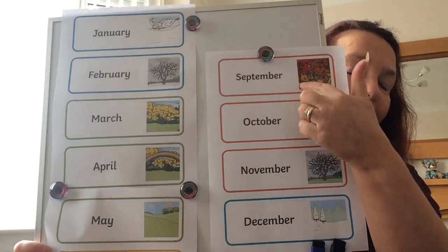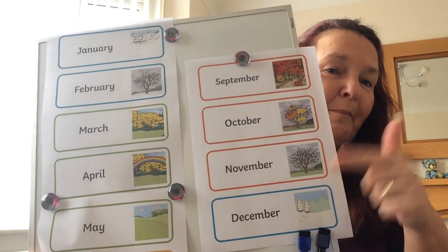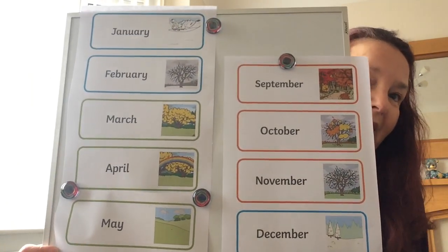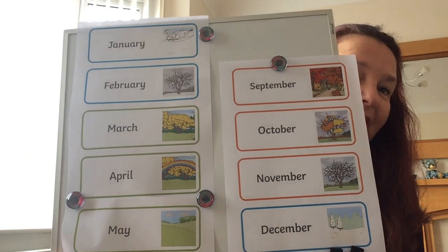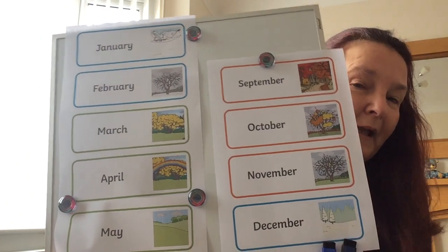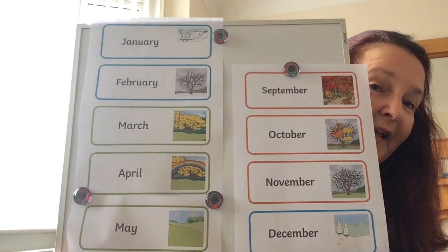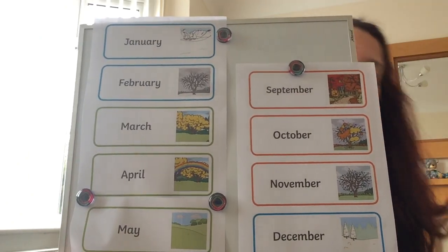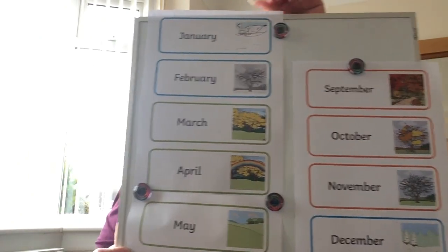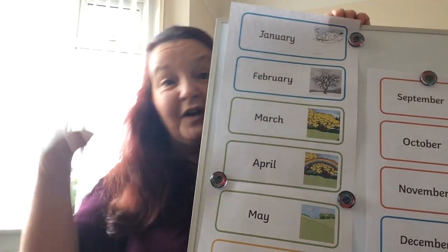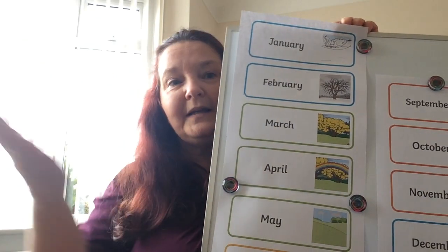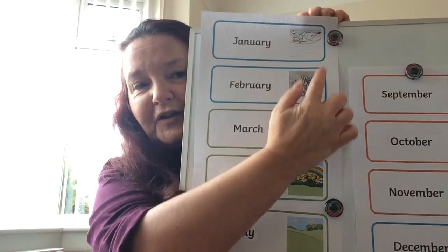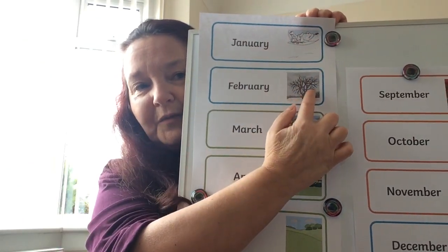September, October, November, December — and these are the months of the year. Now there's 12 months in a year and each month fits into a season, and then the months all start again. So it's like one big circle. If you look carefully on my pictures it gives you a clue.